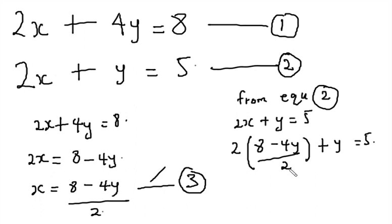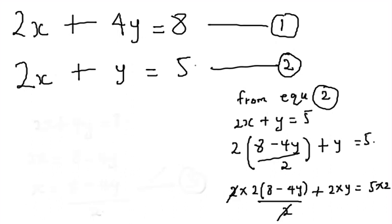The next step is to multiply by 2 to cancel out the denominator here. So we have 2 times 2 bracket 8 minus 4y over 2 plus 2 times y is equal to 5 times 2. We know that 2 can cancel out 2 here. So this equation becomes 2 open brackets 8 minus 4y plus 2y is equal to 10.